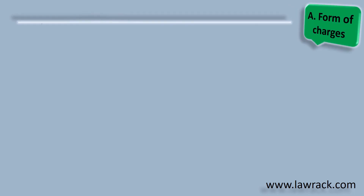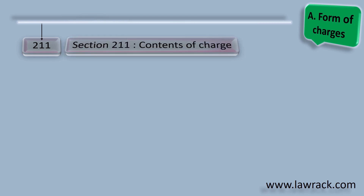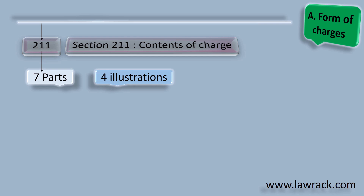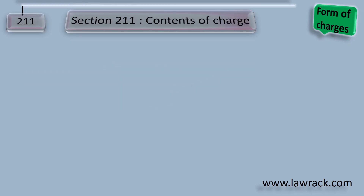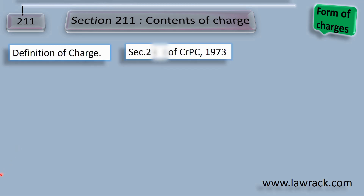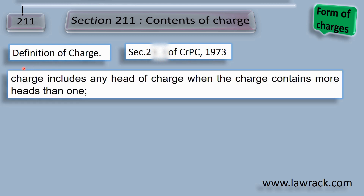Form of charges — Section 211. Section 211 speaks about contents of charge. It has 7 parts and 4 illustrations. Don't miss the illustrations; these are examples from which questions can come in judicial examinations. Before checking Section 211, let's cover the definition of the word 'charge.' It is given under Section 2D of CRPC 1973. It's not explaining the word charge but elaborating that charge includes any heads of charge when the charge contains more heads than one.